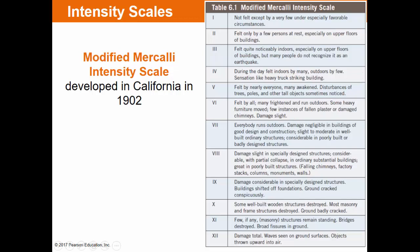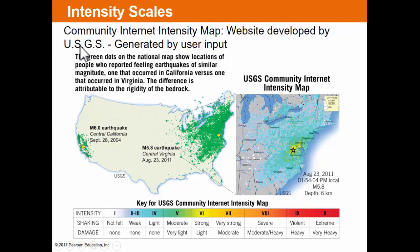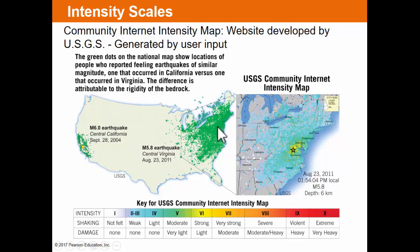Another intensity scale developed recently by the USGS is the community internet intensity map. People go to their website and report what they felt, creating a map. The April 23rd, 2011 earthquake just north of Richmond was felt over a massive area — people in South Florida reported feeling it. Conversely, a 2004 earthquake of magnitude 6.0, which released more energy than the 5.8, was felt in a much smaller area because the eastern United States has much more solid and rigid rock, so waves travel further.